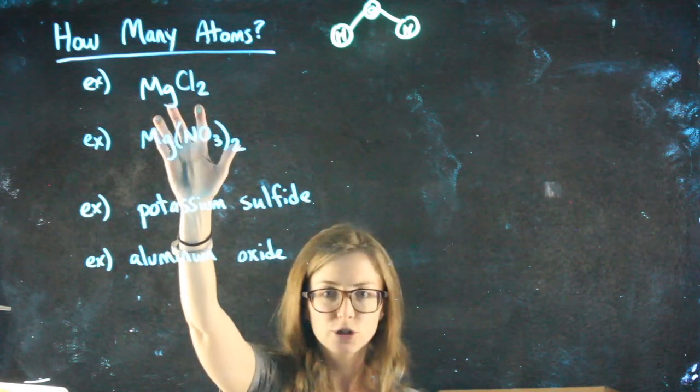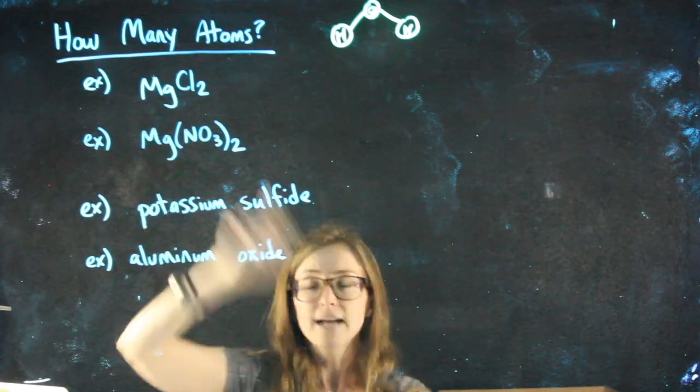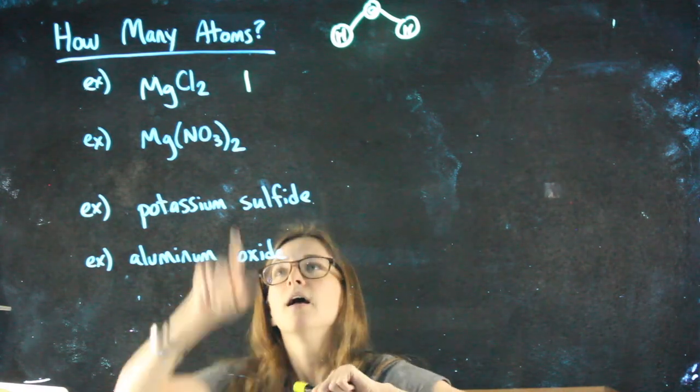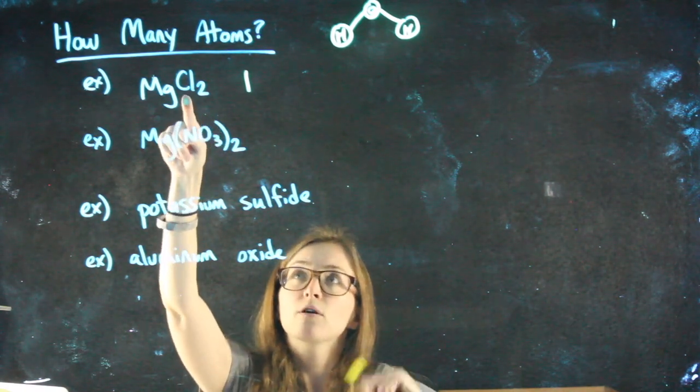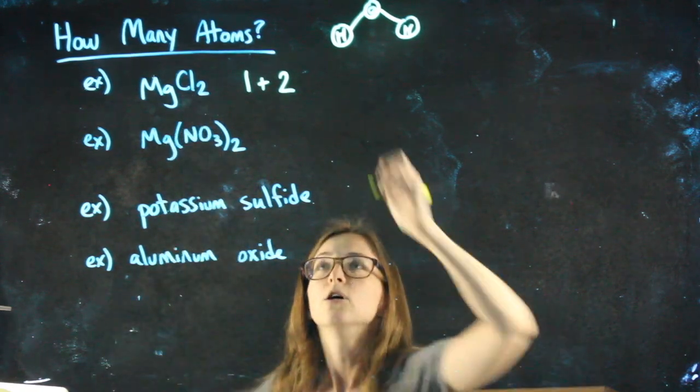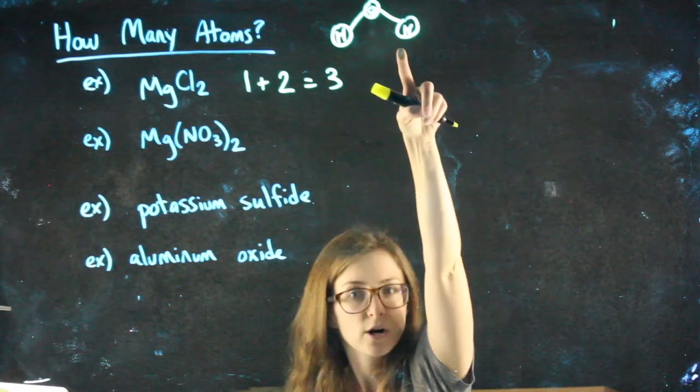So in MgCl2, there is not a subscript for magnesium. That tells me I have one atom of magnesium. There is a subscript of two on the chlorine. That tells me I have two atoms of chlorine. So overall, MgCl2 is made of three atoms, similar to water.